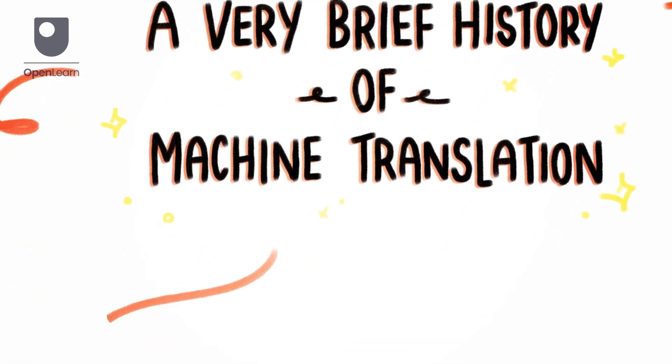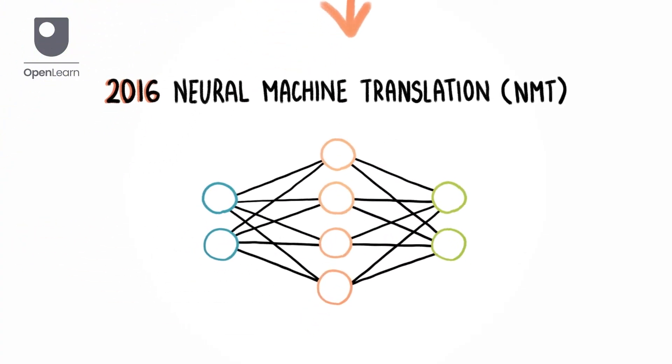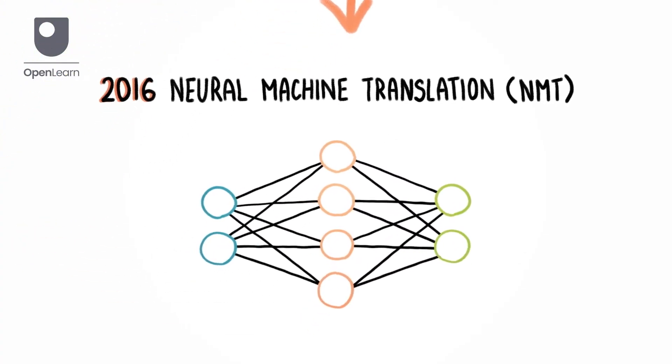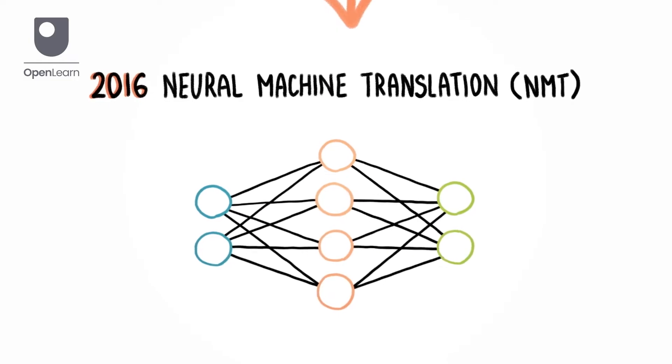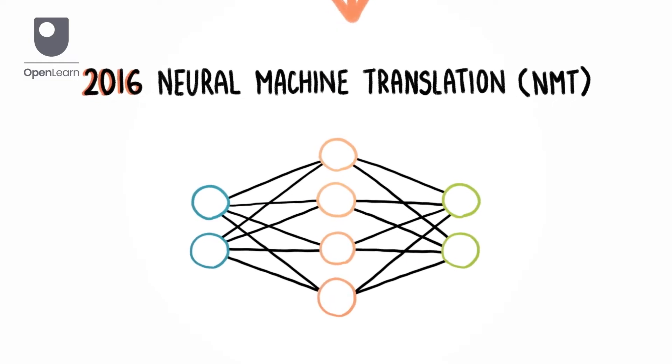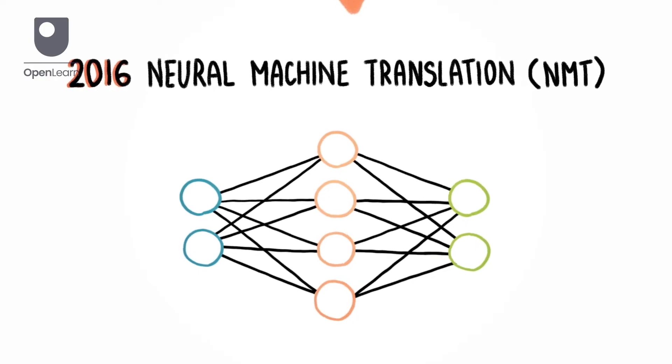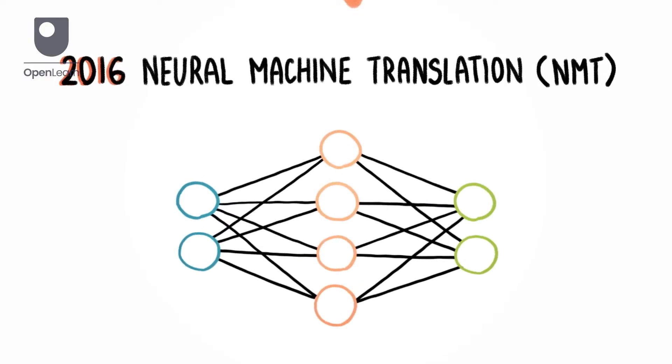The breakthrough came with artificial intelligence. In 2016, Google Translate adopted Neural Machine Translation, NMT, which uses neural networks to process words as numbers and sentences as patterns.